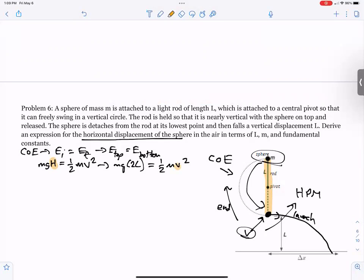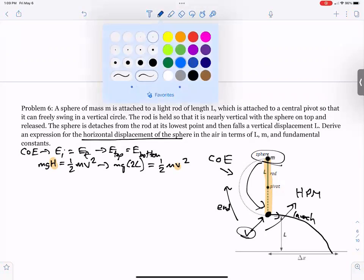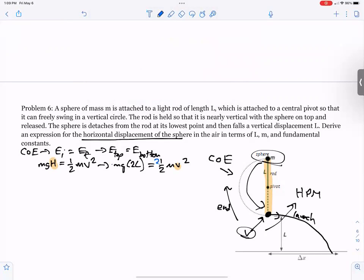Solve the equation for V. We will multiply by two and divide the mass and then square root. So V is equal to the square root of 4GL.